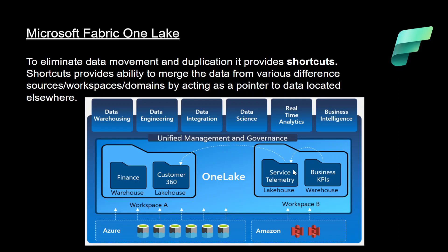This shortcut concept works not just workspace to workspace, but also across clouds. If you have some data in Azure and some data in an Amazon S3 bucket, that collaboration has been made effortlessly seamless. You can create a shortcut to your Amazon S3 bucket — you don't need to copy the data from S3 into OneLake. You just create a shortcut and whenever you want to access the data from Amazon S3 you can do so. The shortcut acts like a pointer, so from one cloud to another you are not doing any data movement.